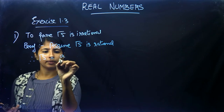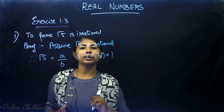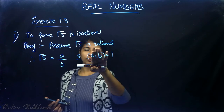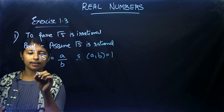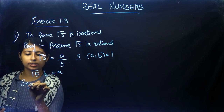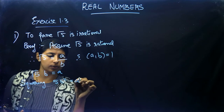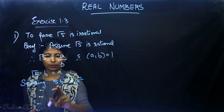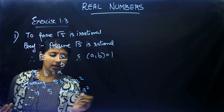Assume √5 is rational. Therefore √5 can be written in the form a/b such that HCF(a,b) = 1 — meaning we can find a and b which are co-prime numbers. Since √5 is rational it can be written as a/b. Then: √5 × b = a, and squaring both sides gives 5b² = a².